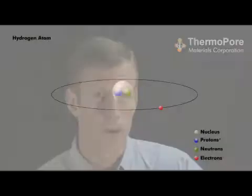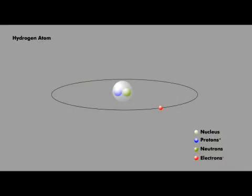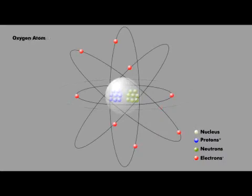Hydrogen is the simplest element on the periodic table. It's made up of one proton and one electron. Oxygen, on the other hand, is composed of eight protons and eight electrons. In all cases, electrons orbit around the atom's nucleus, and they maintain their position in what we'll refer to as the atom's orbital shell, which can be represented as a simple thin-walled sphere that the electrons are free to travel within.